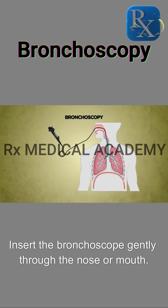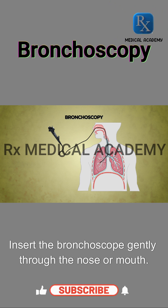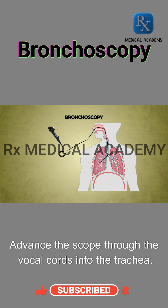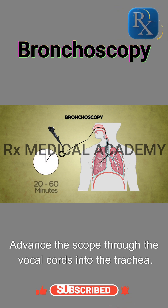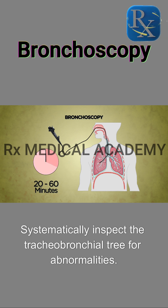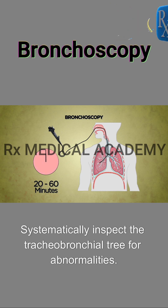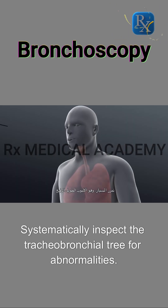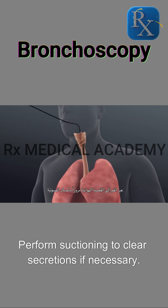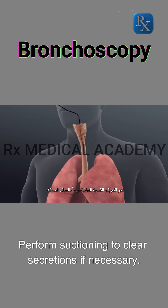Insert the bronchoscope gently through the nose or mouth. Advance the scope through the vocal cords into the trachea. Systematically inspect the tracheobronchial tree for abnormalities. Perform suctioning to clear secretions if necessary.